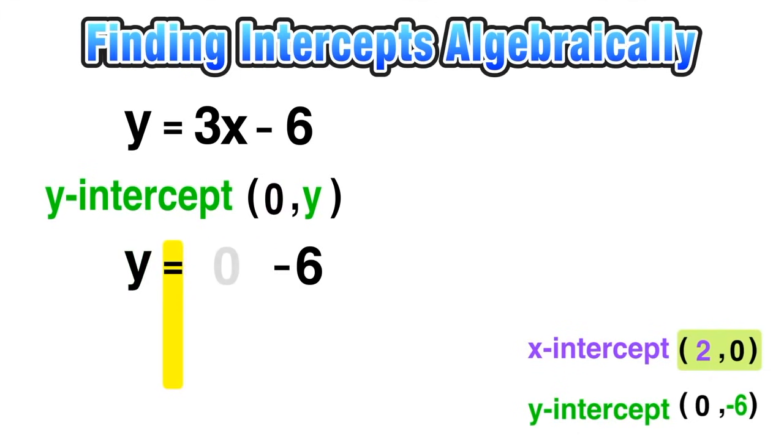Since three times zero is just zero, that'll just disappear, and what we are left with is y = 0 - 6, which is just negative six. So again, that helps us to find the y-intercept with coordinates (0, -6).